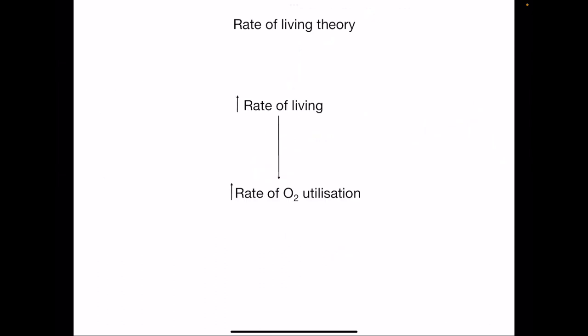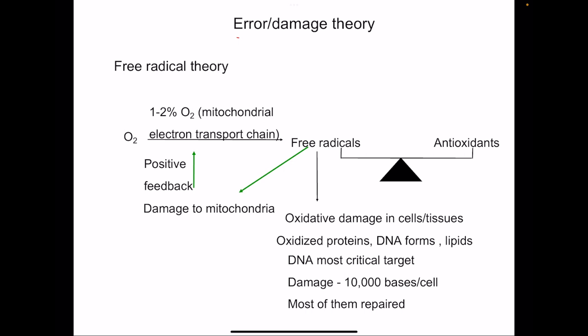Now let us talk about the theories of how do we age. One theory is rate of living theory, which says that increase in the rate of oxygen utilization ultimately causes premature death. Any animal having very high metabolism is going to have premature death, so their life span will be much smaller. This is explained in two ways. One is the error damage theory, the free radical theory, which states that the more oxygen we consume in mitochondria, one to two percent of this oxygen is converted to free radicals.